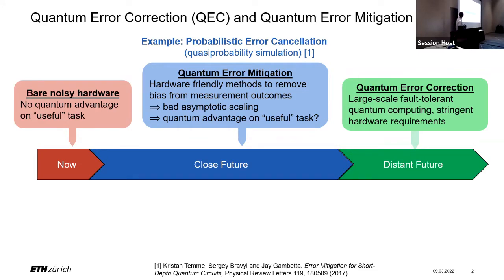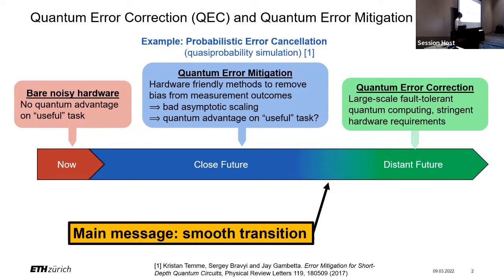Error mitigation techniques are more meant as a way to achieve some quantum advantage before reaching the error correction regime. One example is probabilistic error cancellation, which is an instance of quasi-probability simulation, and which will play a central role in my talk. The key message I want you to take away is that we believe the transition from error mitigation to error correction is not going to be a clear-cut transition. We believe that especially in the early days of error correction, many ideas from error mitigation will still play a central important role.